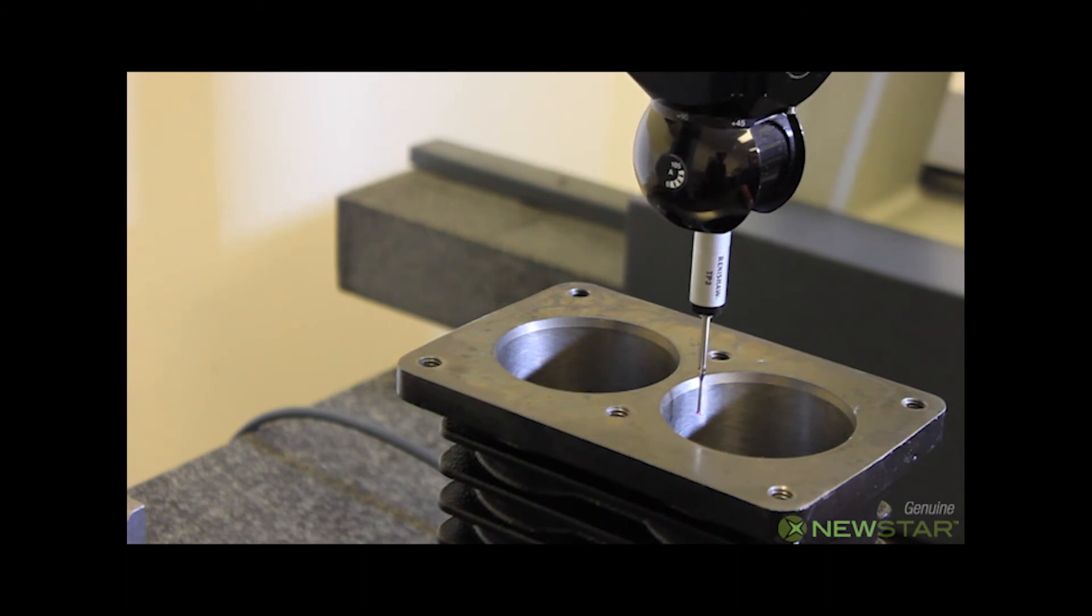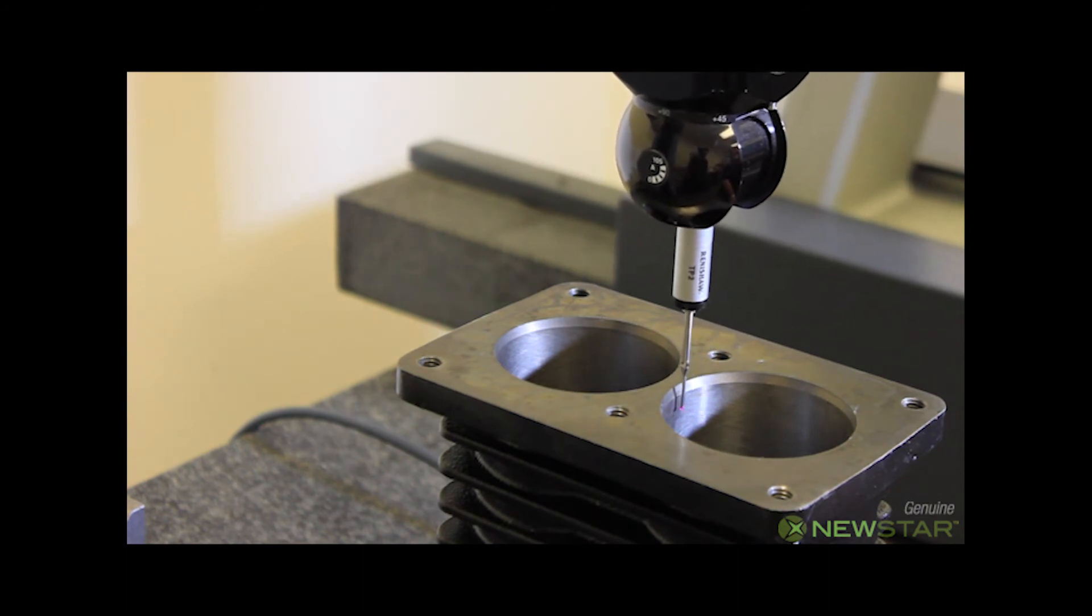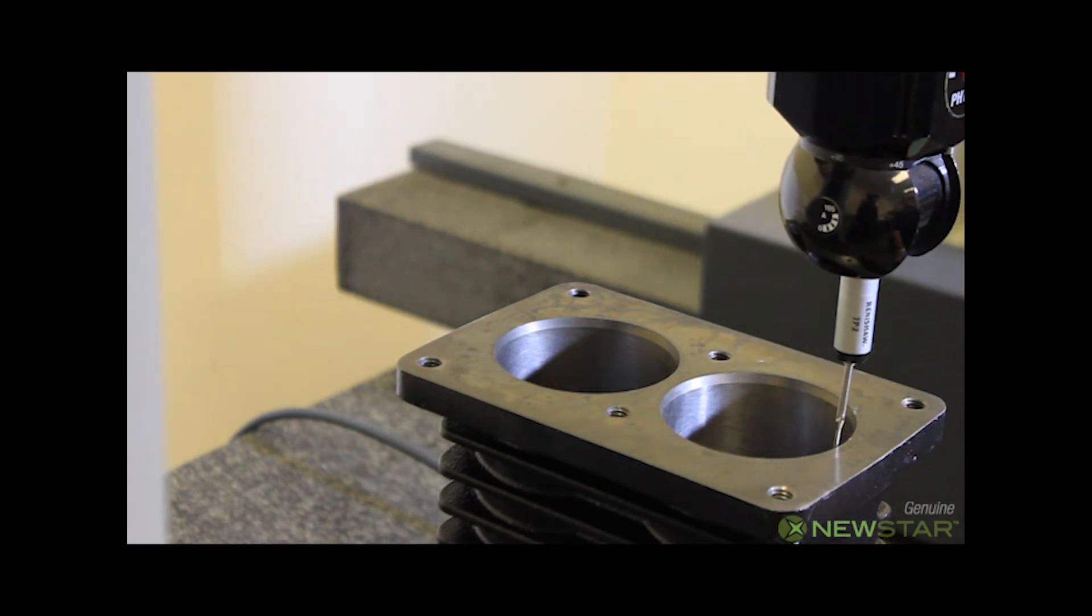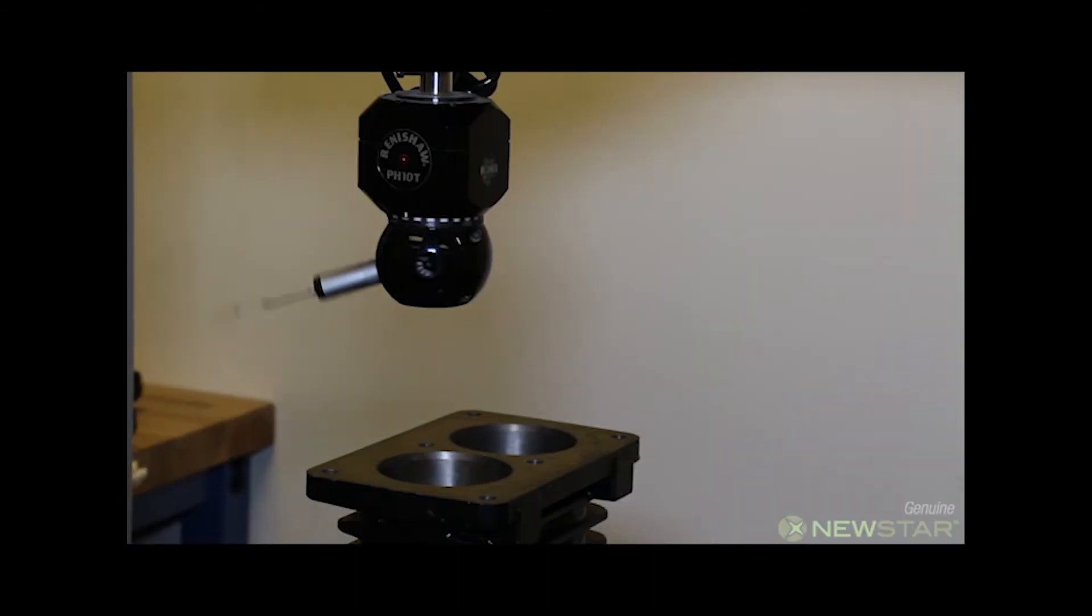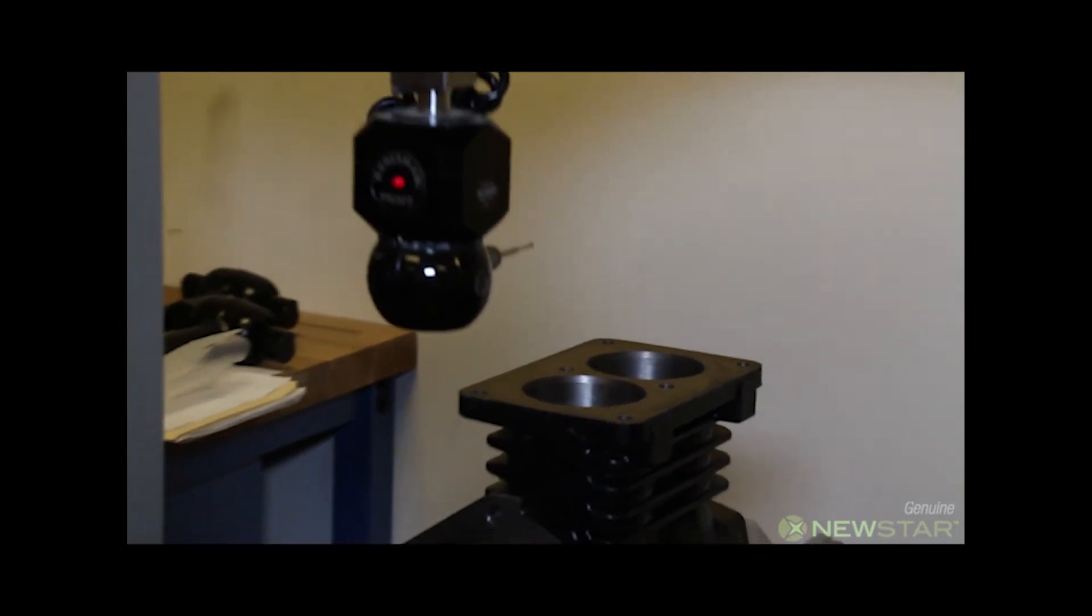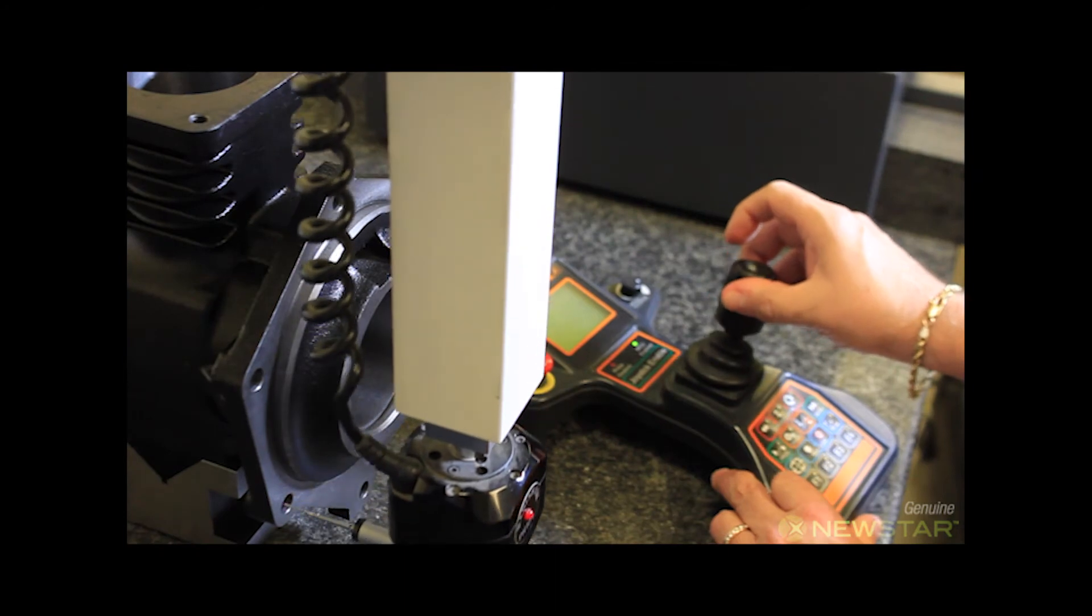The engineer will check for the flange dimensions, hub and bearing diameters, flange bolt hole dimensions, etc. All these dimensions are fed into the computer for comparisons to the OE dimensions.